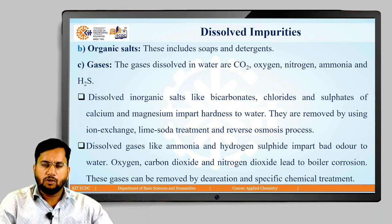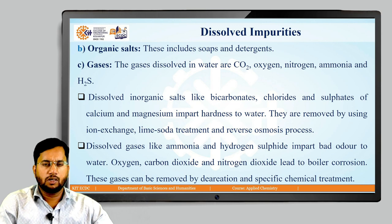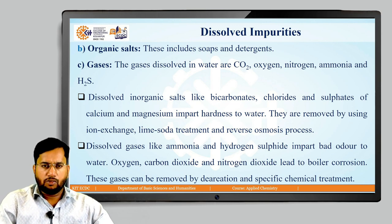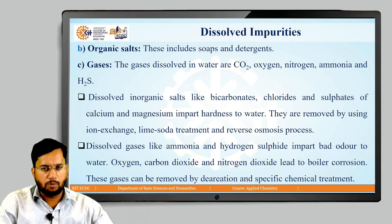Dissolved ionic salts like bicarbonates, chlorides, and sulfates of calcium and magnesium impart hardness to water. Generally, we can remove these dissolved ionic salts using different water purification techniques like the ion exchange method, soda lime treatment, and reverse osmosis process.